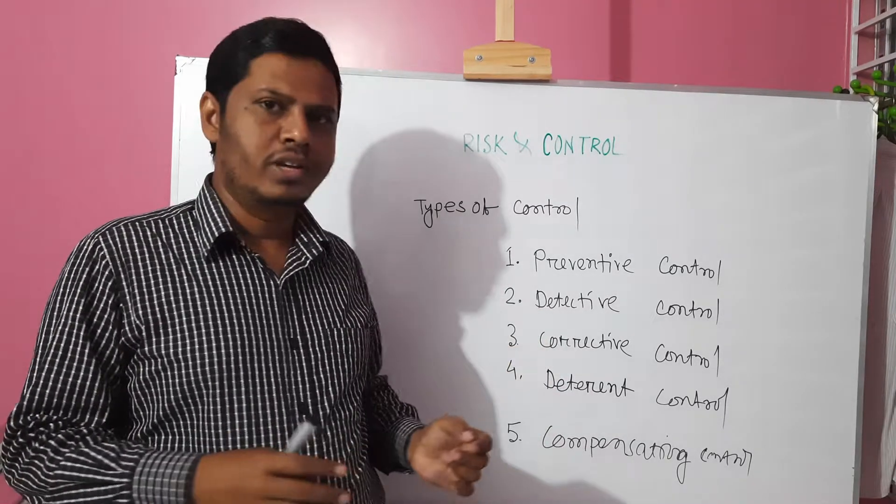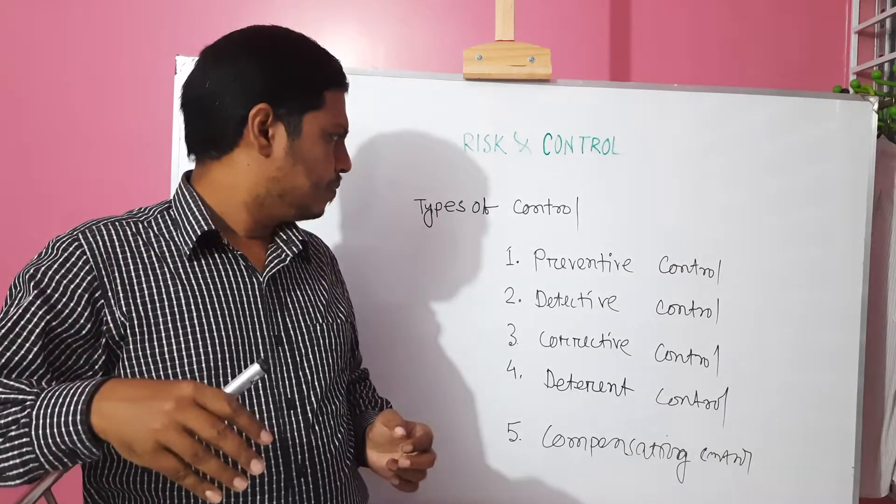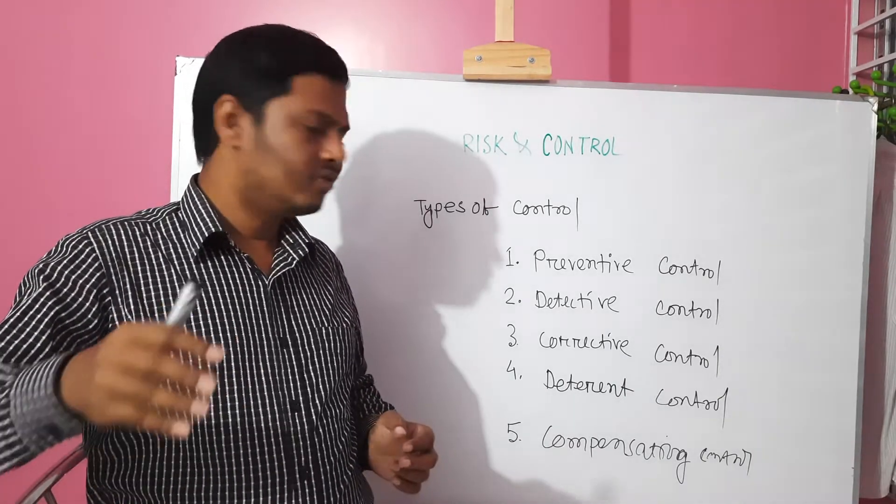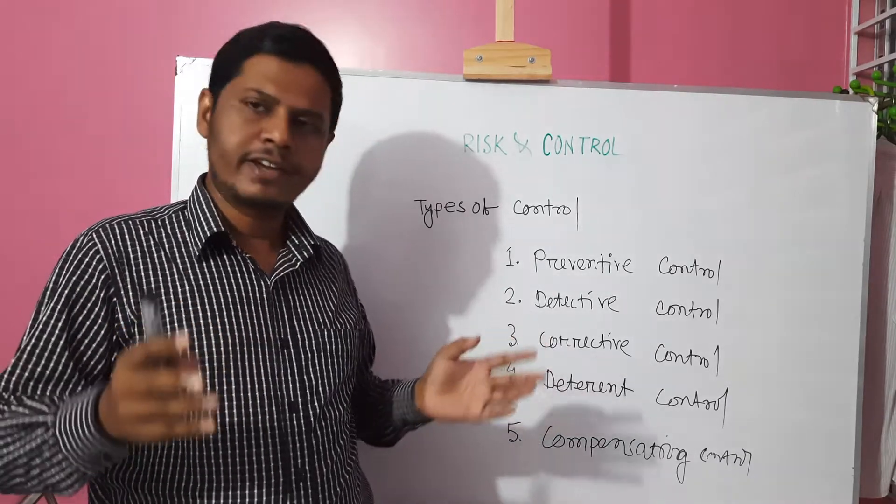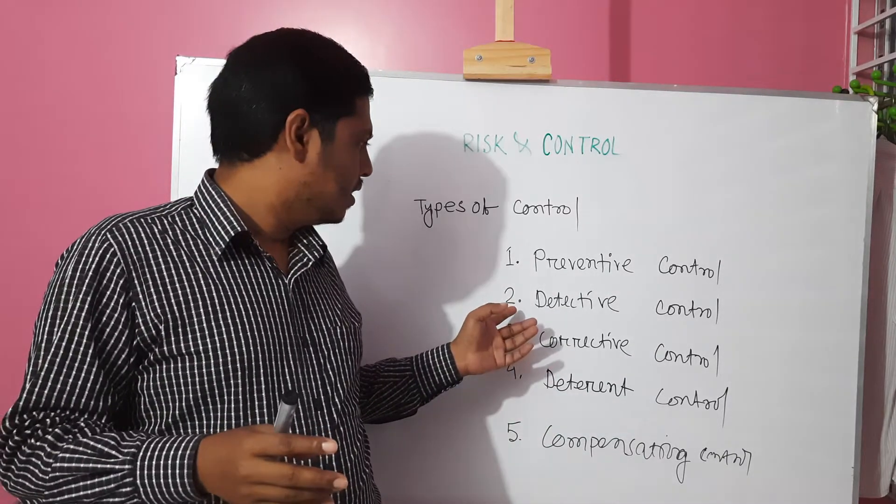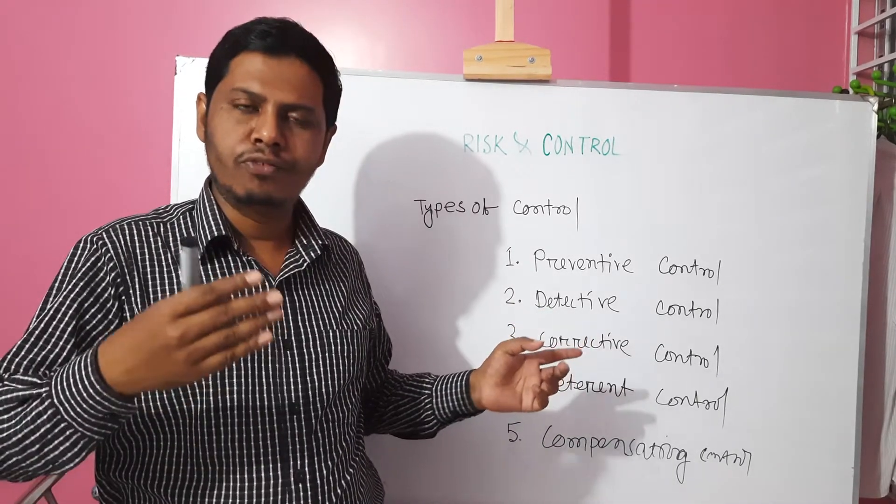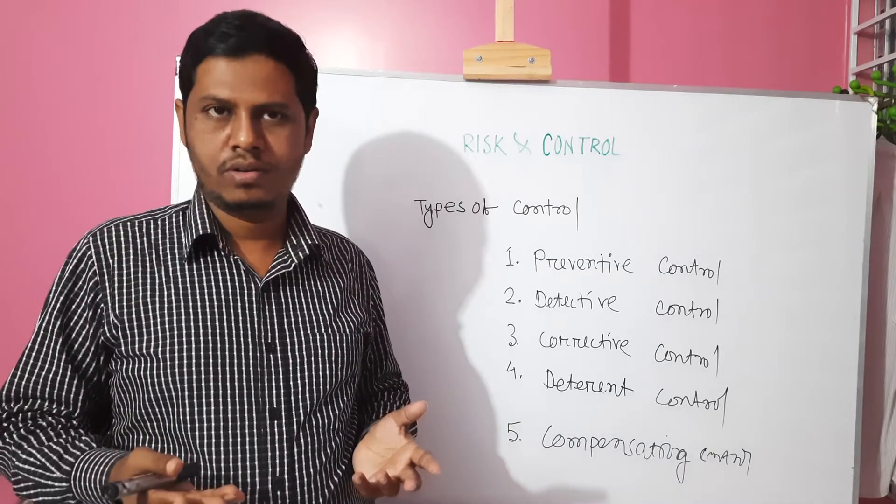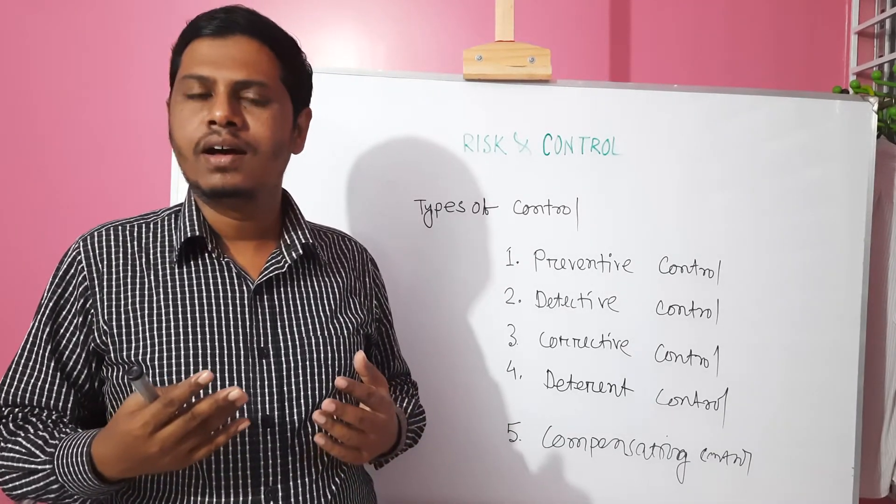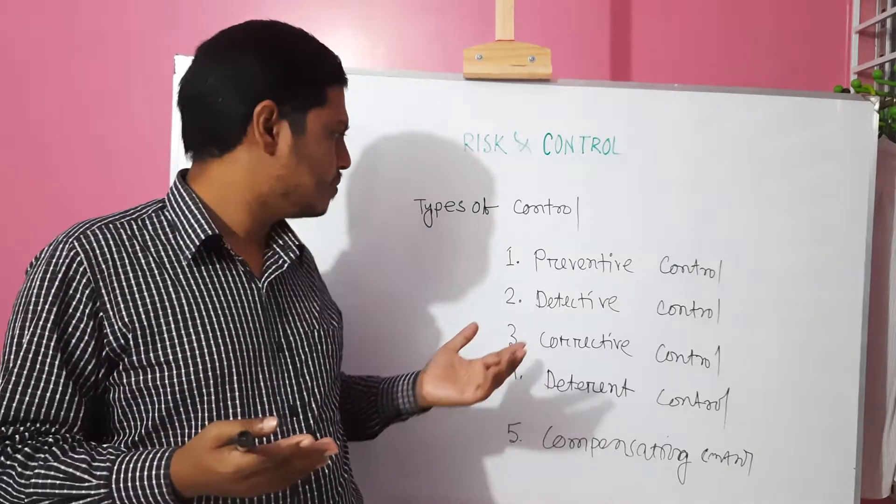The next is detective control. If the vulnerability is exploited by the threat and the system is affected, then we use the detective control just for detection purpose. We see the log monitoring or different types of mechanisms, SIEM, different types of monitoring tools.